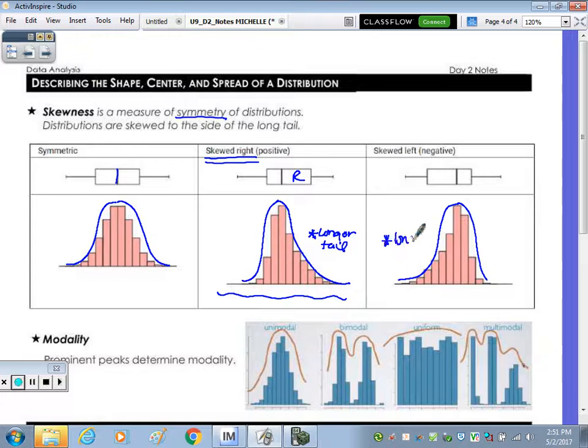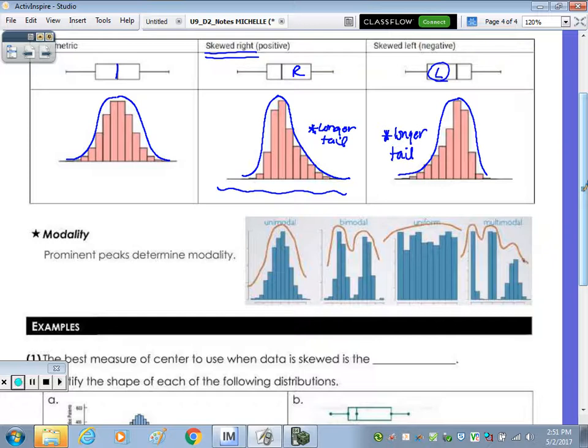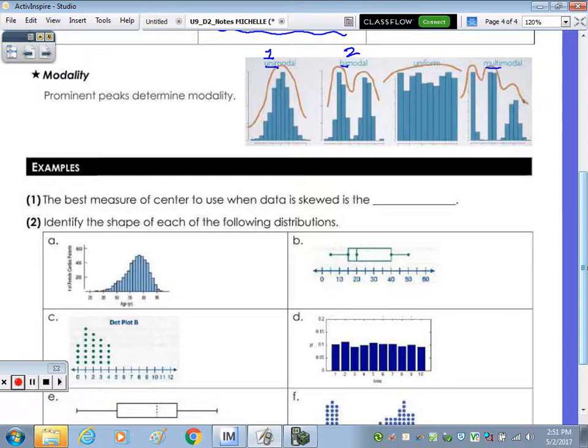When you're talking about modality, that's the number of peaks in the data. Unimodal, mode being mode, or what you see the most. Prefix uni means one by two. Uniform means it's pretty much straight across, where multimodal you'll see more than two peaks. If you think about the best measure for center, and what are your measures of center? Mean. Mean, what's the other two? Median. Median and? Mode. Mode. When data is skewed, think of it as an outlier. Which is the best measure of center? Median. The median. Good.